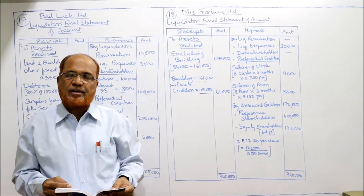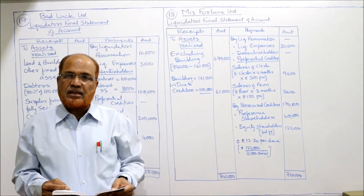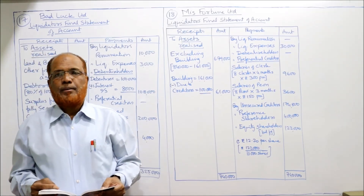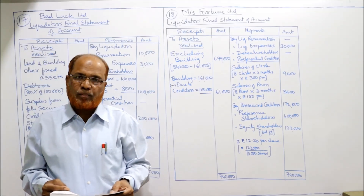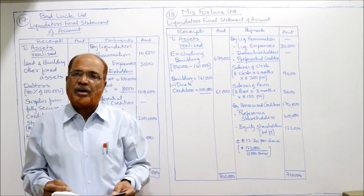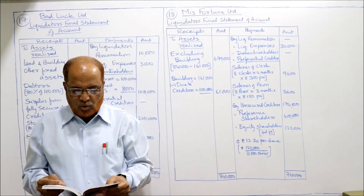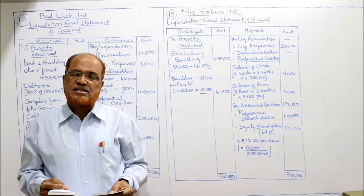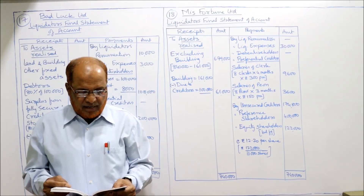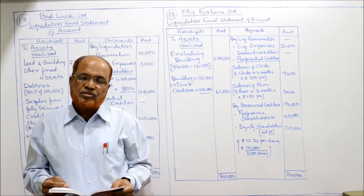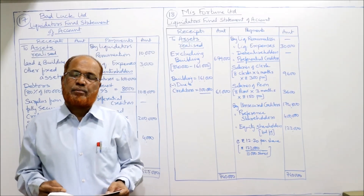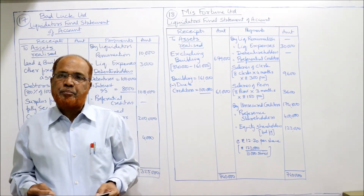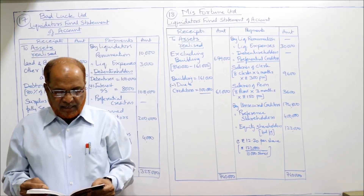8 clerks × 4 months × rupees 300 per month = 9,600 rupees outstanding — this is preferential. Similarly, 8 peons × 3 months × rupees 150 per month = 3,600 rupees — also preferential. So these two are preferential creditors. In addition, the company books show creditors worth rupees 1,74,800 — these are unsecured creditors.